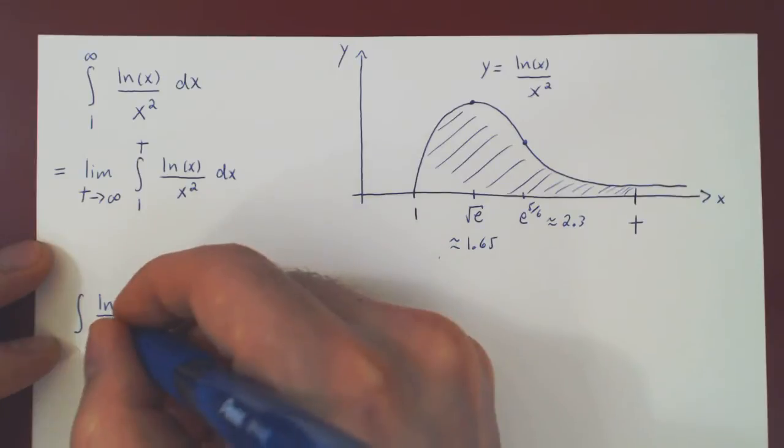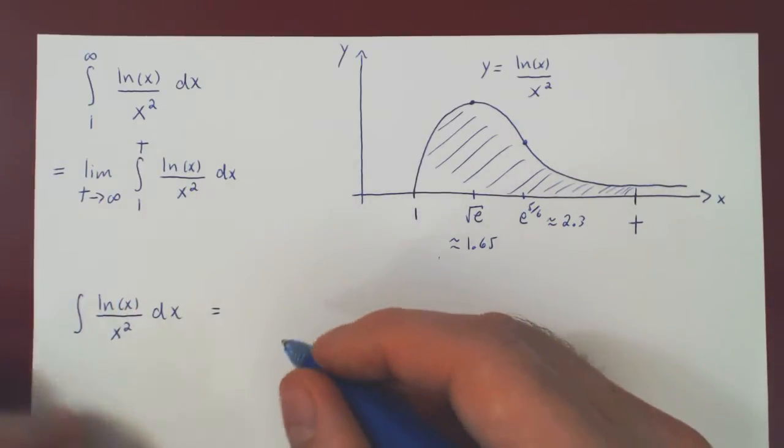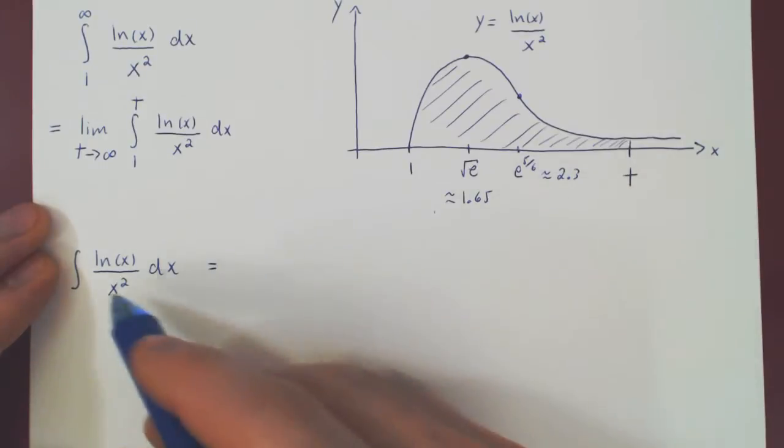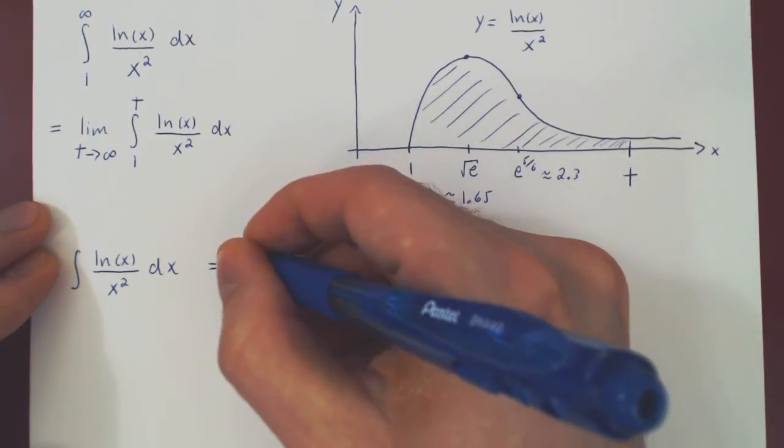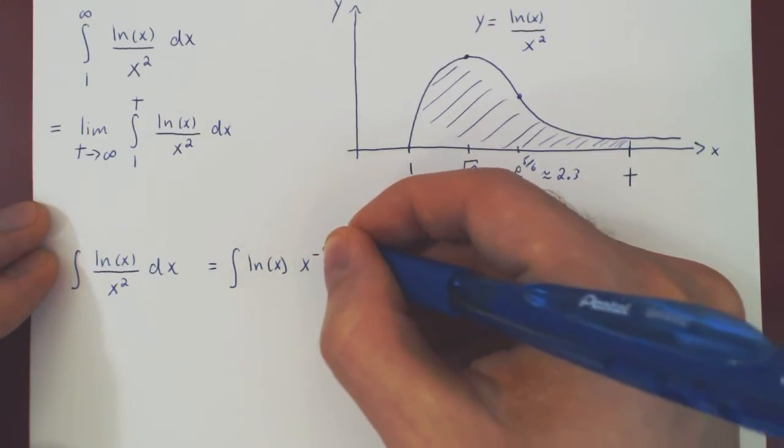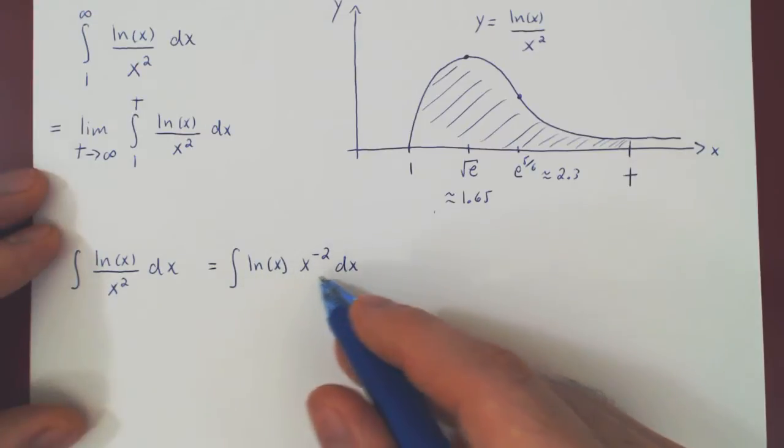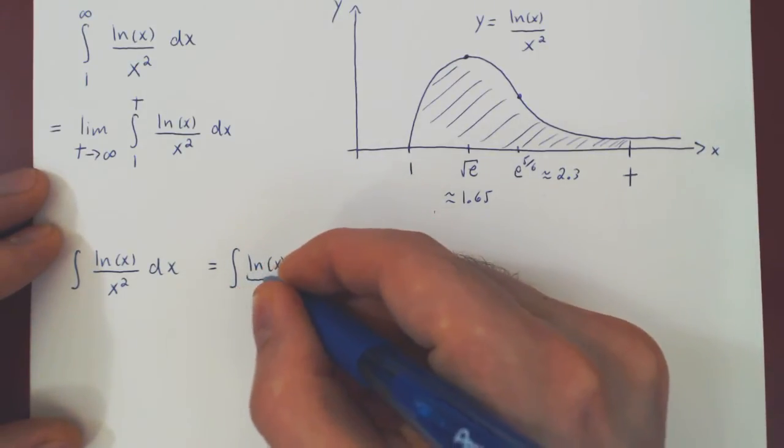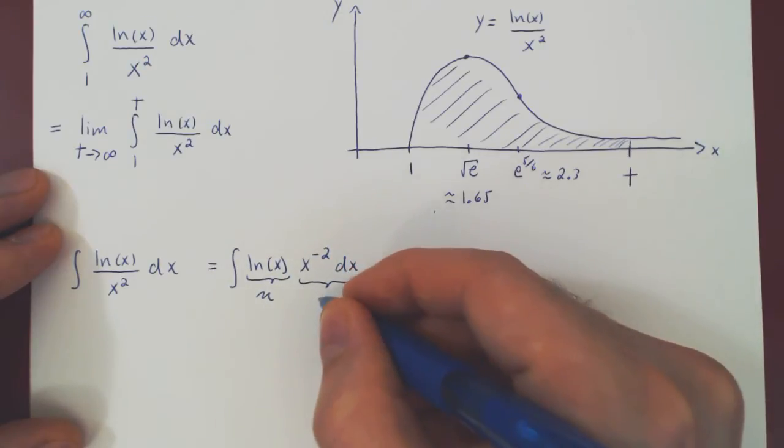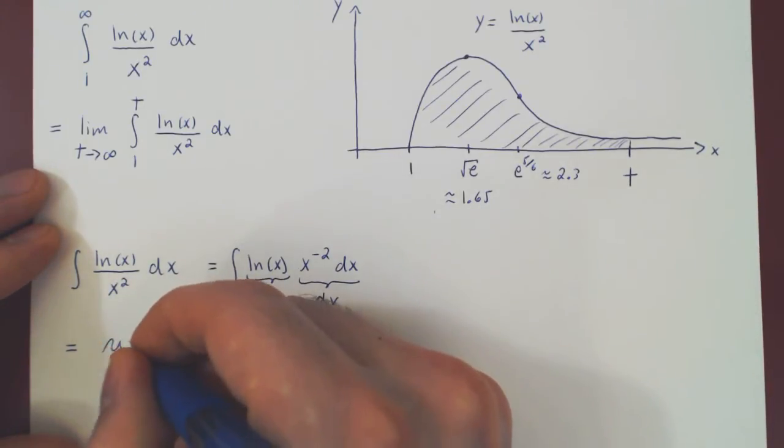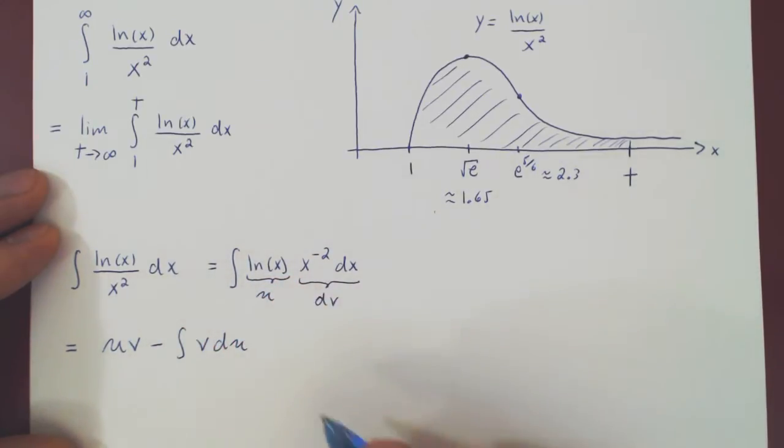So how do we find this antiderivative? Well, if it were ln of x over x, it would be a simple u-substitution letting u be ln of x. But as we have ln of x over x squared, a u-sub will not work. But if I rewrite ln of x over x squared as ln of x times x to the negative 2 dx, then you can see this will be doable using integration by parts. We let u be ln of x and dv be all that's left over. If you recall, integration by parts says that the integral of u dv is uv minus the integral of v du. So we're missing our du and we're missing our v.